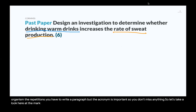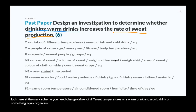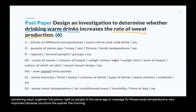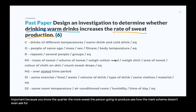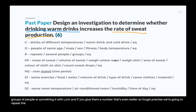Looking at the mark scheme: for Change, you need 'drinks of different temperatures' or 'a warm drink and a cold drink.' For Organism, you need people of the same age, mass, sex, fitness, or body temperature — body temperature matters because a hotter person will produce more sweat. For Repeats, the mark scheme doesn't require a specific number but you must state you'll repeat with several people or groups. Giving a number is even better — for good practice, say you'll repeat three or five times for reliability.